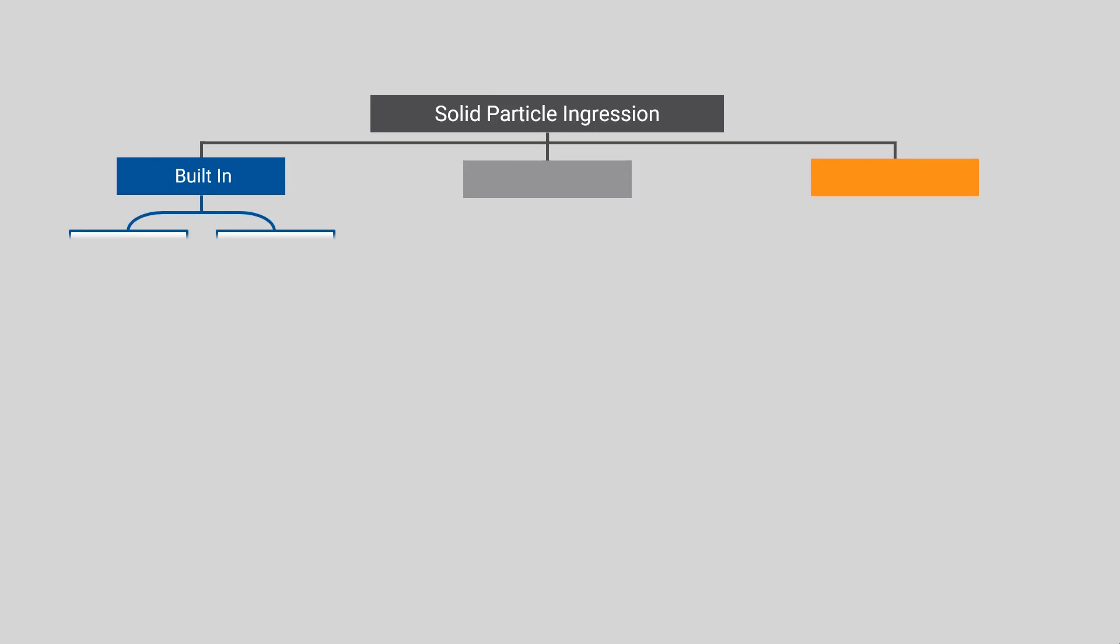The first one are built-in contaminants. Built-in contaminants are the particles that are in either machine parts or brand new parts out of the box while we're going to install them. This could be some service debris or anything like that during the whole maintenance process. So these are built-in into the machine.